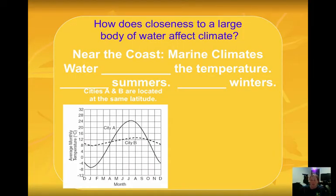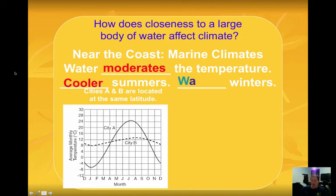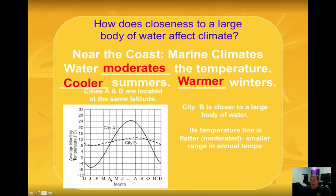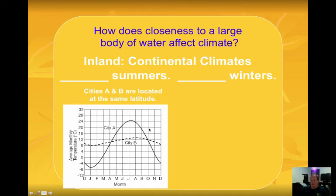If you live near the coast you're in a marine climate — water moderates the temperature, keeping it average, which leads to cooler summers and warmer winters compared to inland locations. Looking at City A and City B on climographs, the flatter curve indicates proximity to water — City B is near a body of water and City A is more inland. A continental climate, meaning more inland, produces warmer summers and cooler winters, with more temperature extremes.